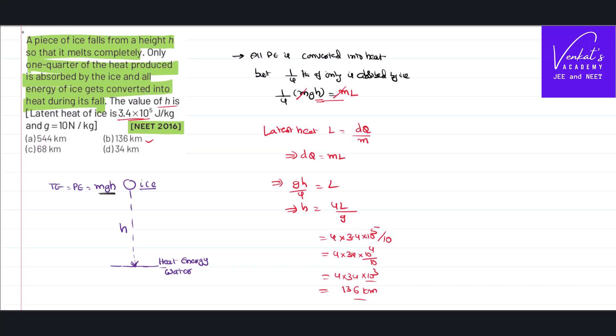So it is just conversion of energy - heat energy is used to convert the ice into water. The only condition is one by fourth of that, as given in the problem. I've taken one quarter into consideration, applied it here to simplify, and got the answer 136 kilometers. Thank you for watching.